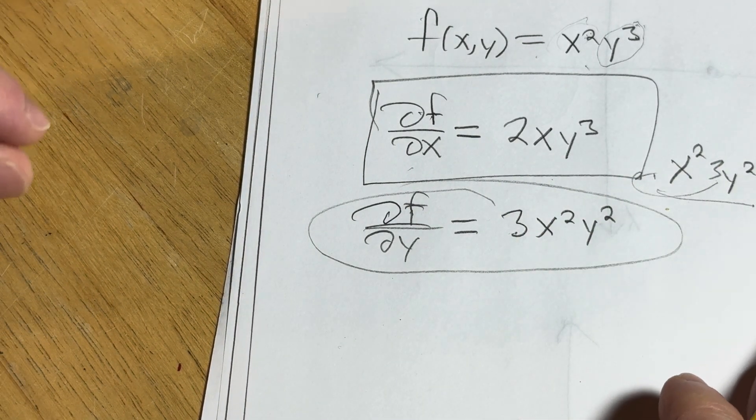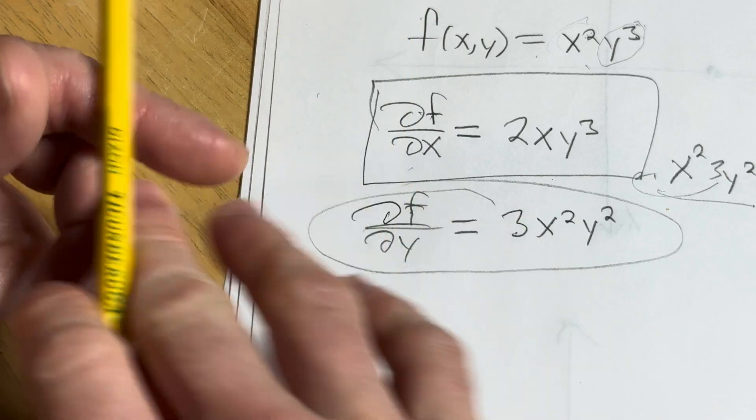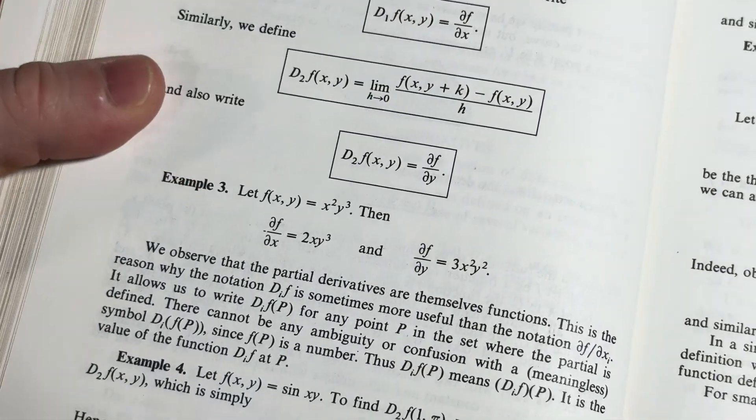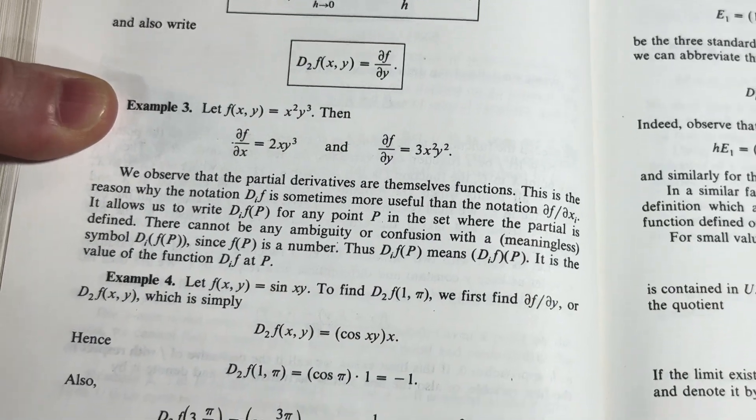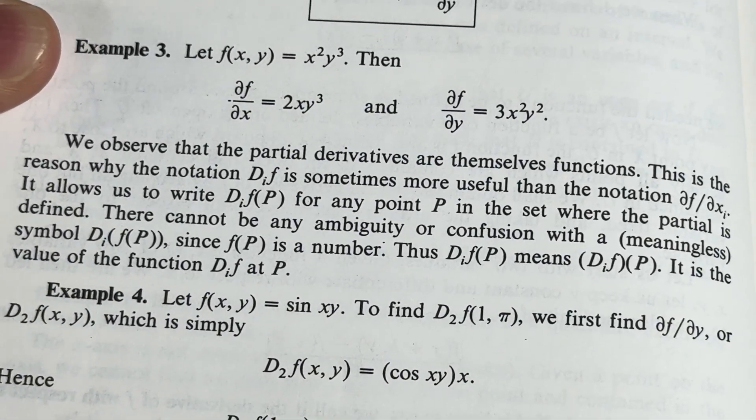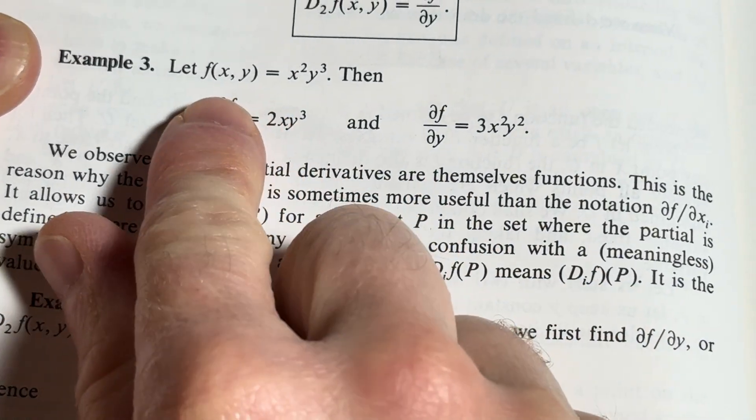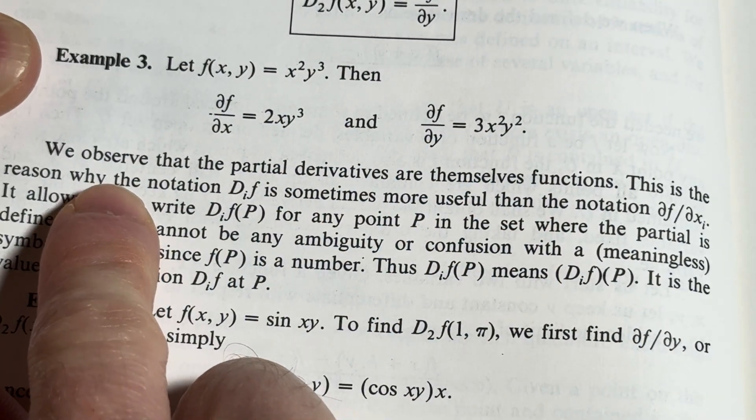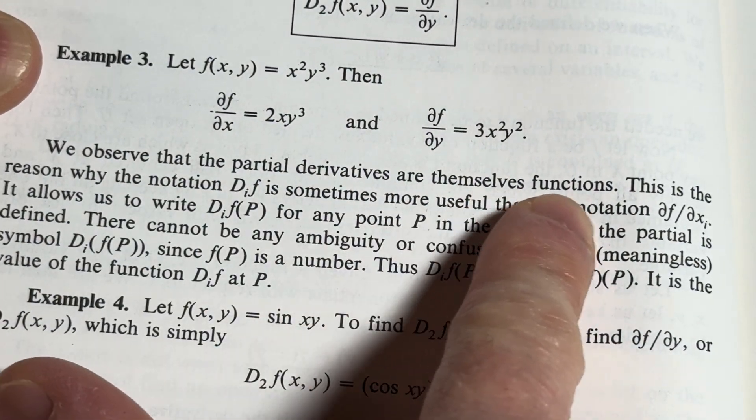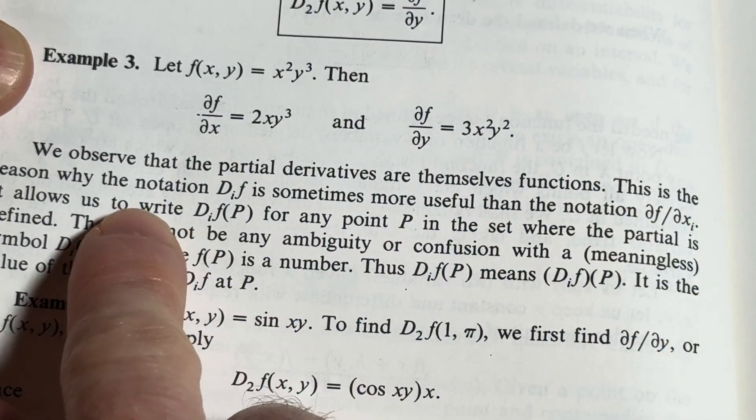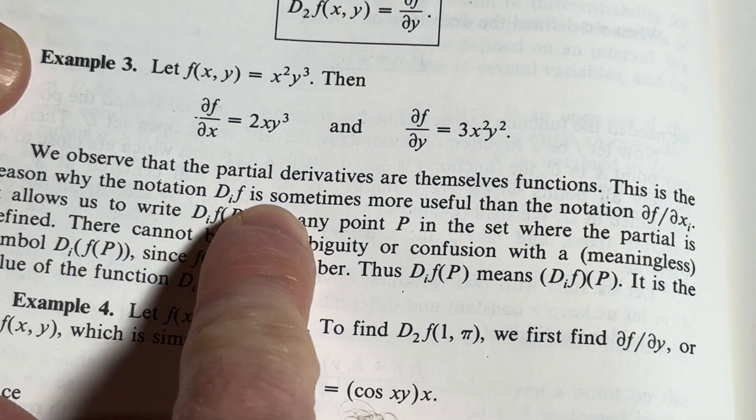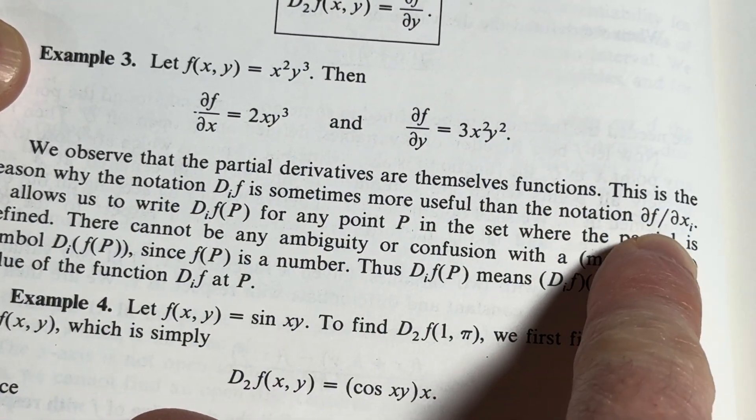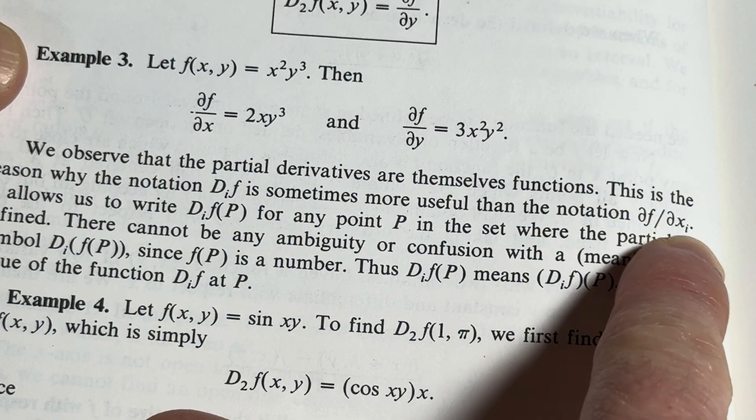Let's take a look now and see what Lang says about this, right? Let's just take a look at the book and see what comments are made in this example. I'm going to zoom in here so you can see. So we have this function here, right? And that's pretty much what we got. We observe that the partial derivatives are themselves functions. Yes, this is the reason why the notation d sub i of f is sometimes more useful than this notation here,